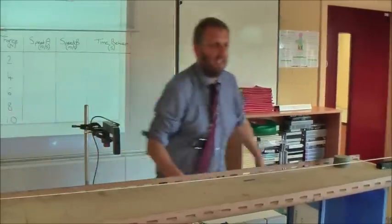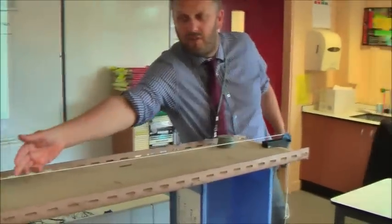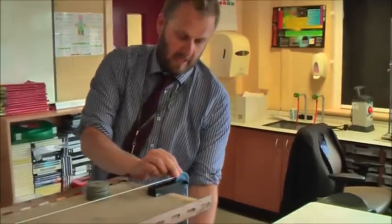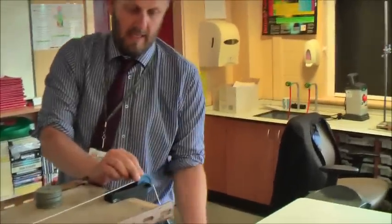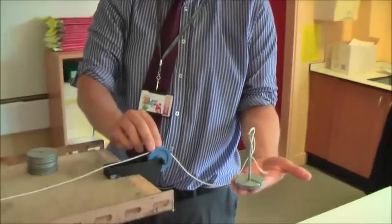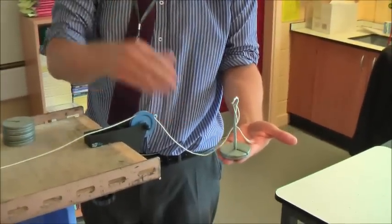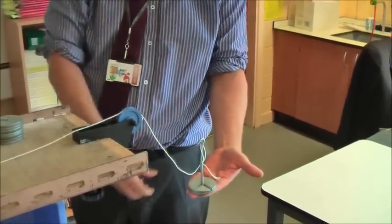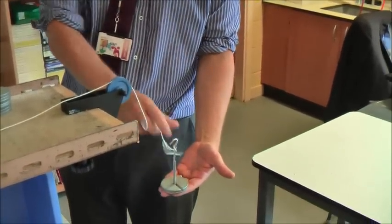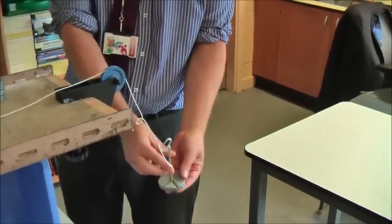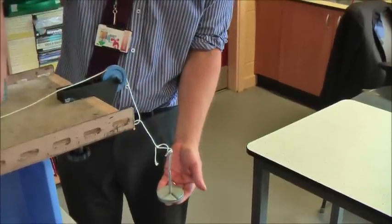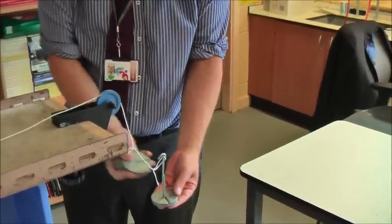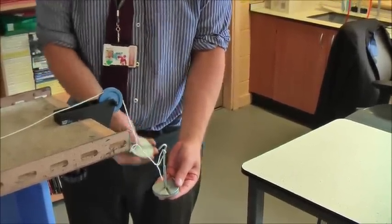You can see a piece of string from the front of the car - it goes all the way over a pulley. Hanging from the pulley we've got some mass. Because this mass is being acted on by gravity it's being pulled down, so this mass has weight - it's a force. We can change the force by adding on extra masses.